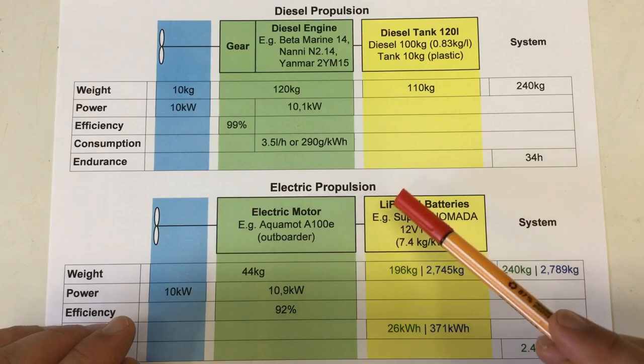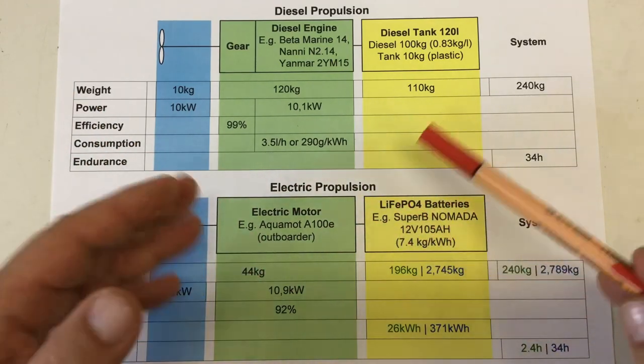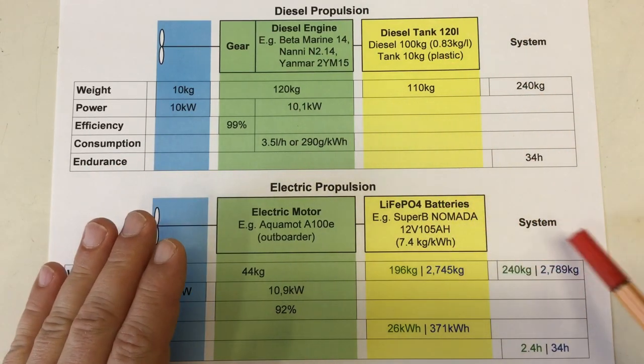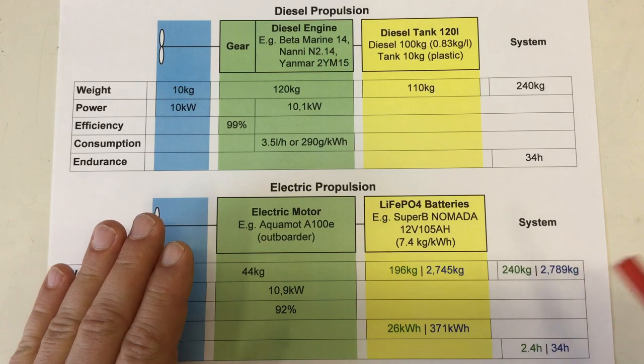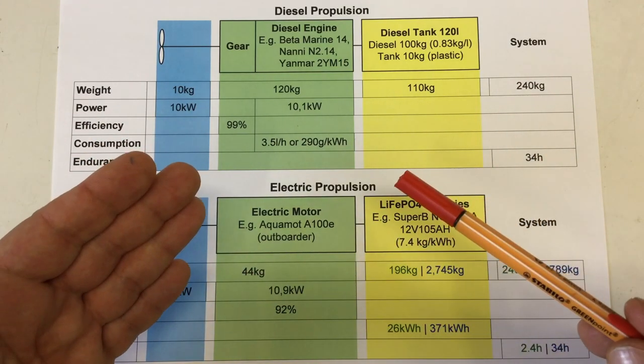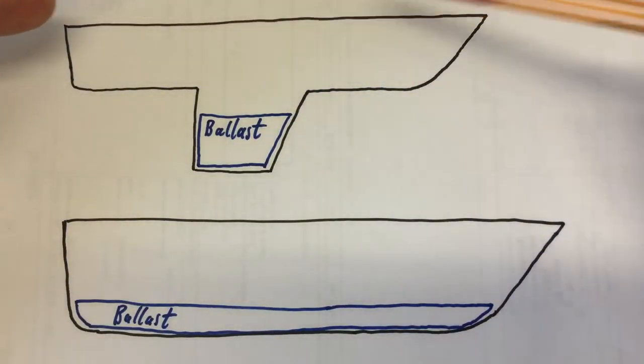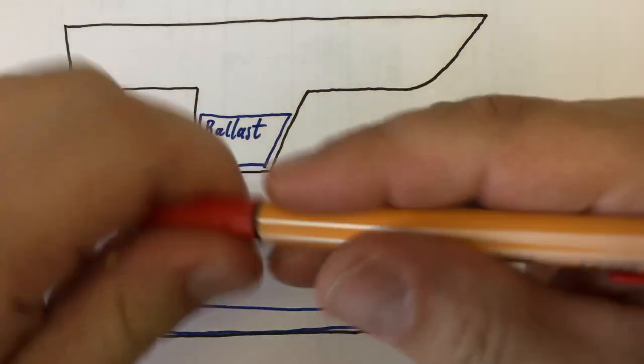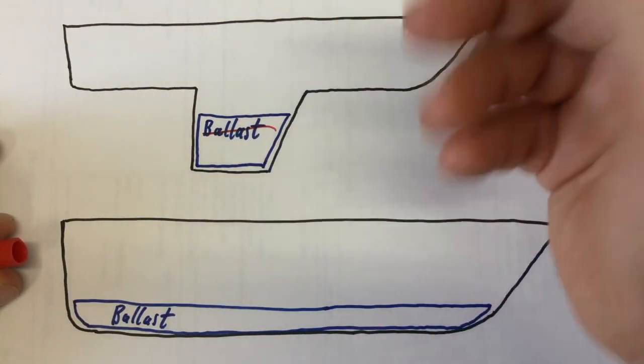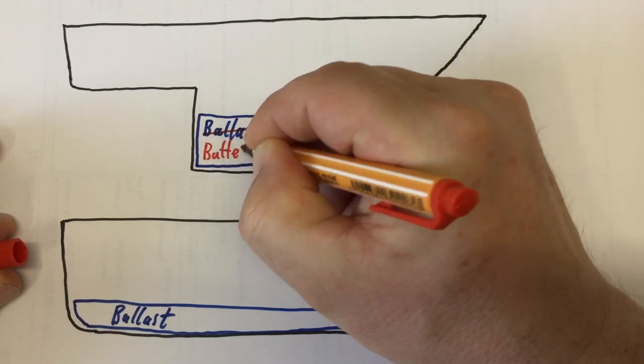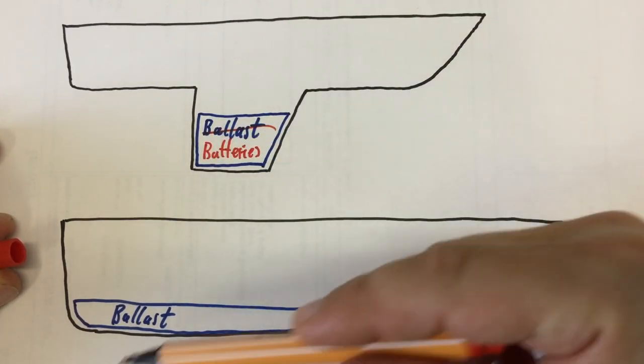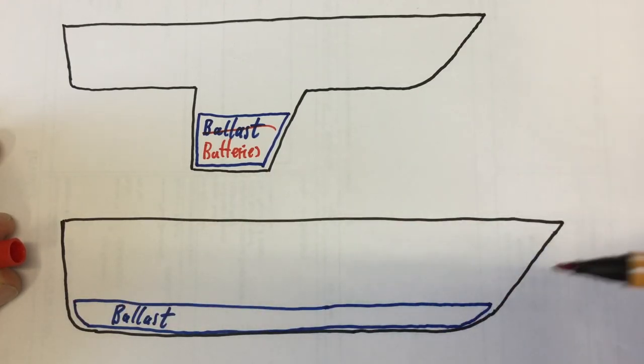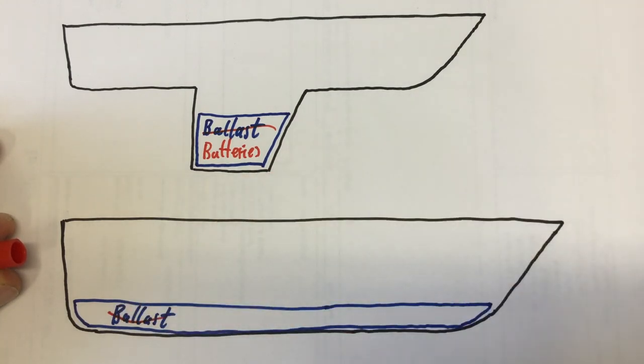But enough with the electric propulsion bashing. Electric propulsion also has advantages compared to diesel propulsion. We can start by looking at the weight again, which might not be that big an issue for some boats. Some sailing boats carry in their very pronounced keels lead ballast. Let's replace that, if space allows it, with batteries. The same is true for other boats. Not all boats carry ballast in their hull, but some do. And there we can replace the ballast with batteries.